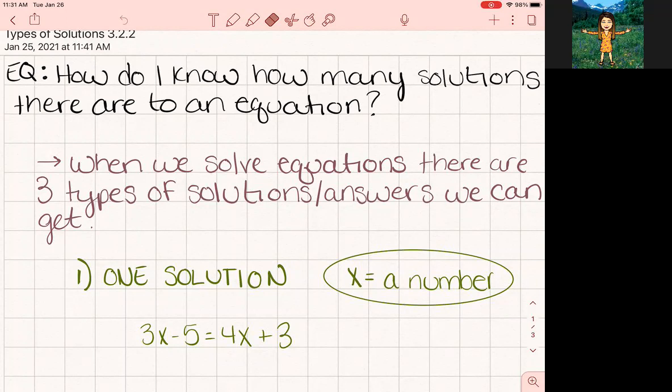Okay, so when we solve equations, there's three kinds of answers that we can get. Number one right here in green is what we're used to doing. We solve it and you get x equals a number. That's one option. X is equal to one number. So let's do this example.